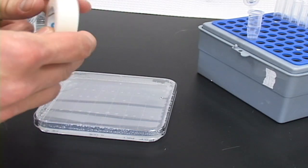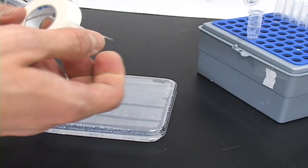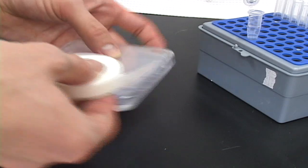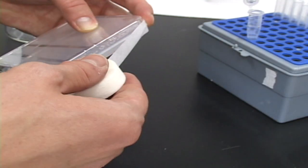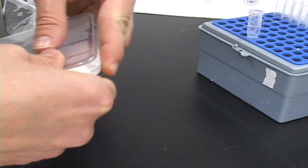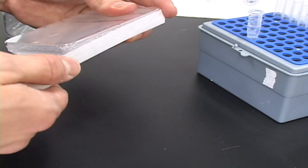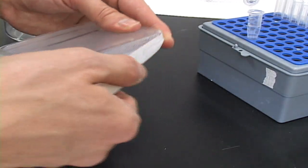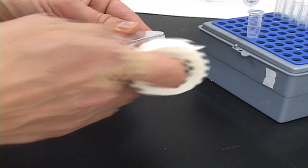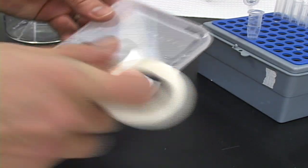After all seeds have been plated, close the lid and seal with micropore tape. This tape is also known as paper tape and can be found in most first aid kits. This tape allows for gas exchange but acts as a microbial barrier. Place the sealed plate in a dark 4 degree Celsius refrigerator. After 3 to 5 days, place the plate vertically under the light source.